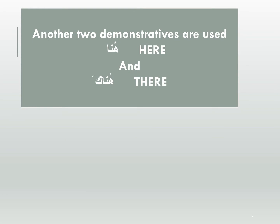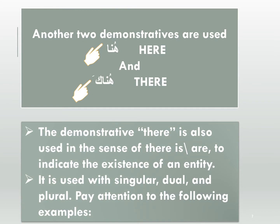Another two demonstratives are used: Huna and Hunaka. Hunaka can mean 'there is' or 'there are,' and we also use it for 'over there.' So Hunaka can mean there is, there are, or over there. Also, Hunaka can be used with singular, dual, and plural nouns. Pay attention to the following examples.